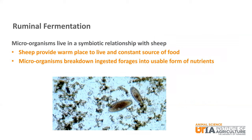The microorganisms and the sheep live in a symbiotic relationship — that means that it is beneficial for both. The animal provides a warm place to live with a constant source of food, room and board so to speak. The microorganisms break down the ingested forages into a usable form that the animal otherwise would not be able to use. Here is a microscopic view of rumen microorganisms. The large brown oblong shapes are one kind of microorganism that is eating and breaking down forages for the animal.